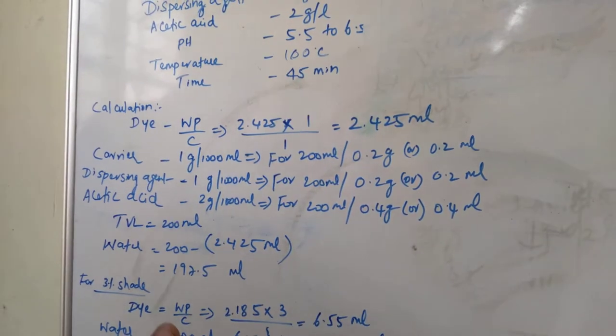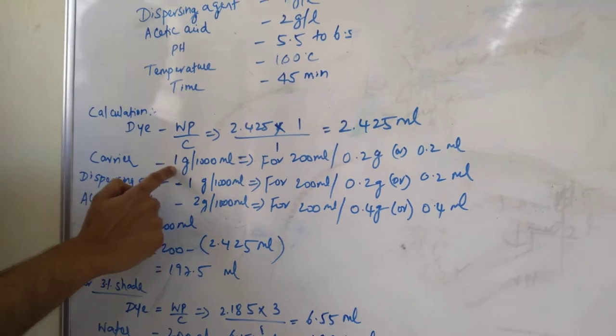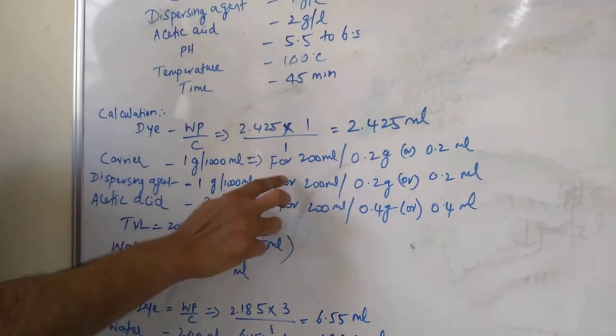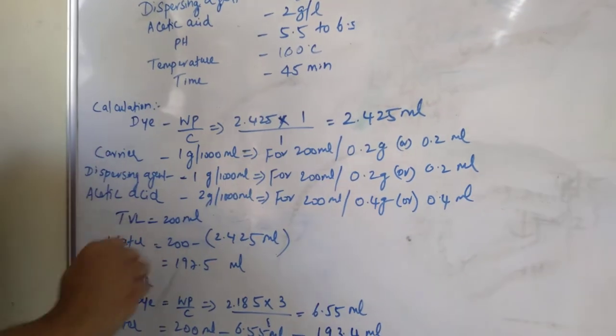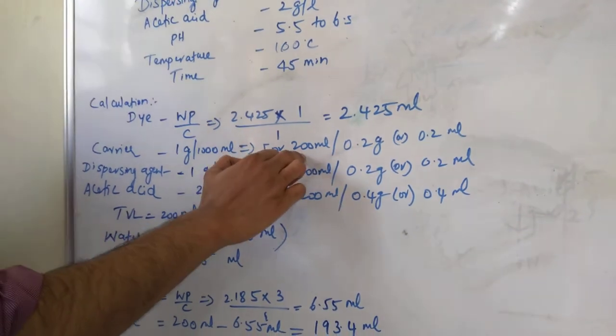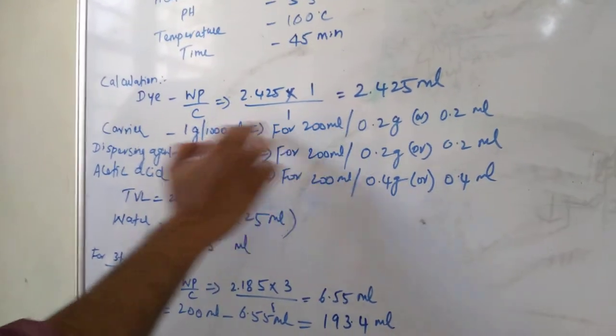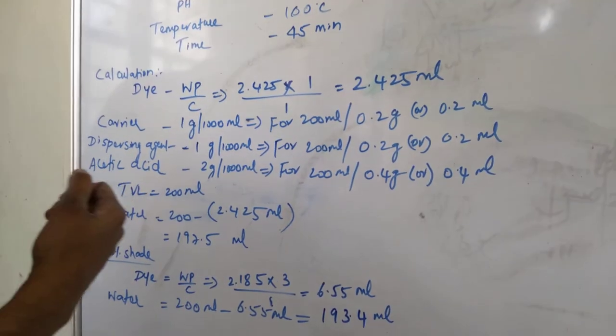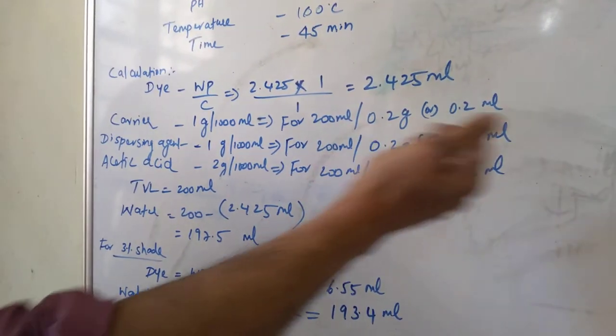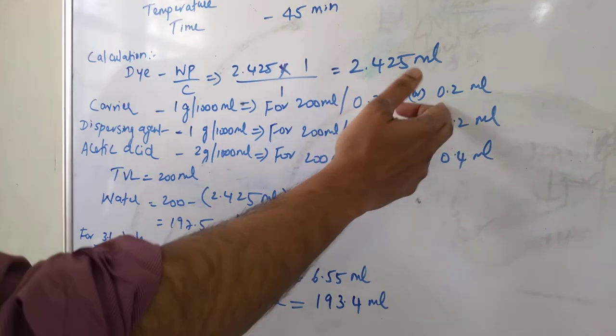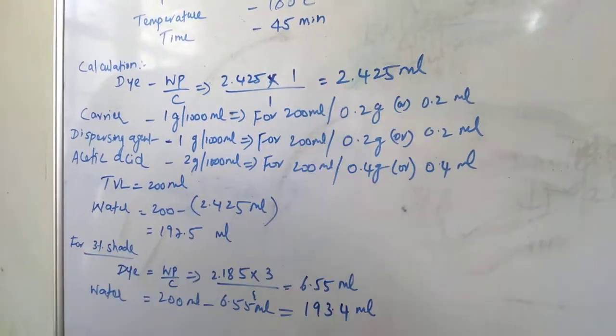And carrier, it is available in solution form. The concentration is 1 gram per liter. So for 200 ml total volume of liquor, 0.2 gram is required because for 1 gram per liter for 200 ml means divided by 5, you will get 0.2 gram. Or you can say directly if you want to take it in liquid form, you can take 0.2 ml.